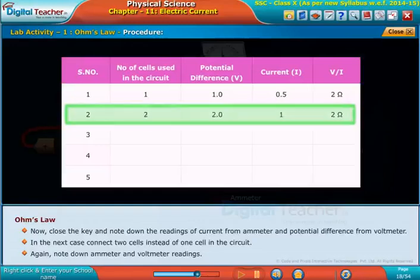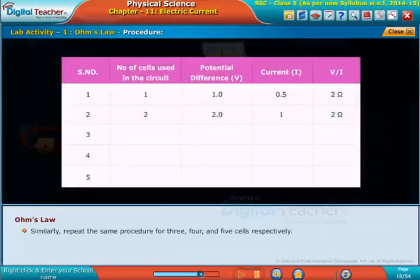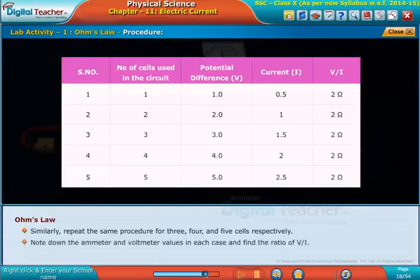Again note down ammeter and voltmeter readings. Similarly, repeat the same procedure for three, four, and five cells respectively.